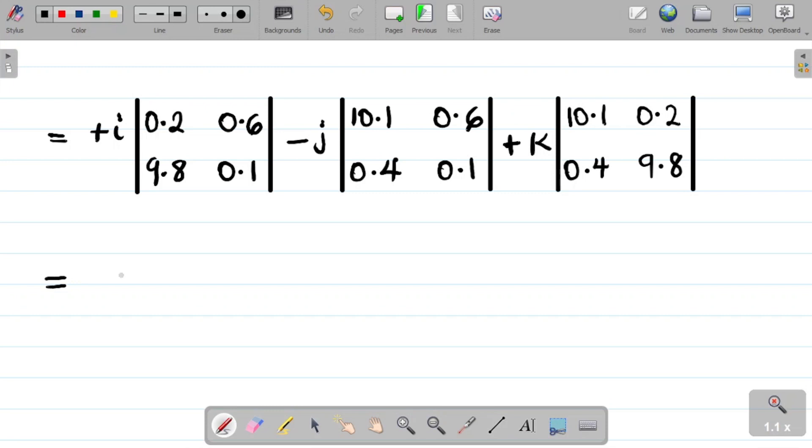Finally I now have my plus k. So I'm having plus k into. For k I'll also cover the row as well as the column. For k I'll cover row and cover column of k. Cover the row of k, that's from k, cover this row. Cover the column of k, that's this. So I'm left with 10.1, 0.2, 0.4, 9.8.